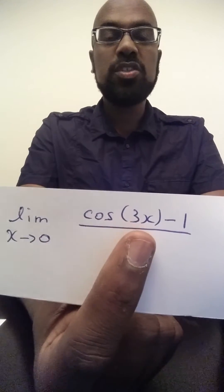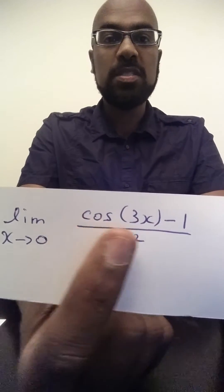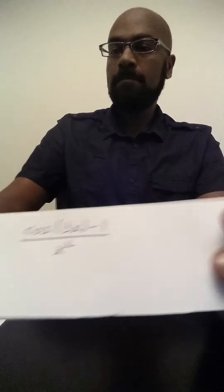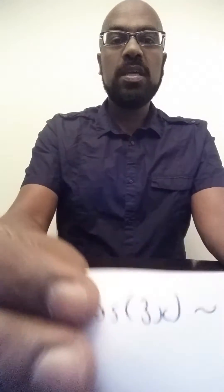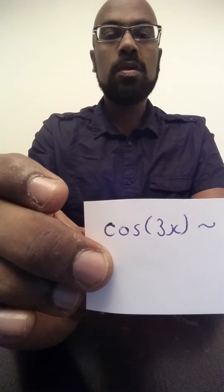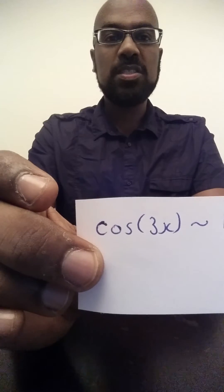How do we do that? Well, that's essentially what the point of Taylor series are. So first, let's take a look at the expansion of the Taylor series for cosine 3x about x equals 0.